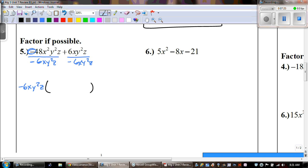And then, after that, we write our remainder inside. So, negative 48 divided by negative 6 is a positive 8. x squared divided by x is x. And then the y's and the z's, those both cancel out. And now, positive 6xy squared z divided by negative 6xy squared z. Well, all of the variables cancel out. And then, we're left with positive 6 divided by negative 6, which gives us a negative 1. So, our final answer is negative 6xy squared z times 8x minus 1.